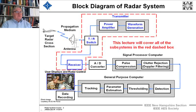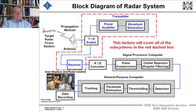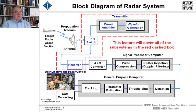This lecture will cover all the subsystems within the red dashed box: the receiver, the transmitter, which will have a waveform generator, power amplifier or power amplifiers that could be a train building up in power depending upon the system, and the transmit-receive switch, which makes sure the receiver doesn't get damaged while you're transmitting a pulse of radar energy out to the target.